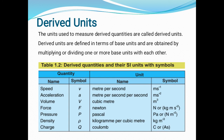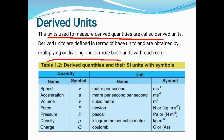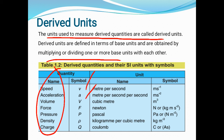Derived units are the units used to measure derived quantities. Derived units are defined in terms of base units and are obtained by multiplying or dividing one or more base units with each other. Table 1.2 contains derived quantities and their SI units with symbols. It includes derived quantities such as speed, acceleration, volume, force, pressure, density, and charge. Physical quantities are typically represented by symbols — for example, v for speed, a for acceleration, V for volume, and F for force.